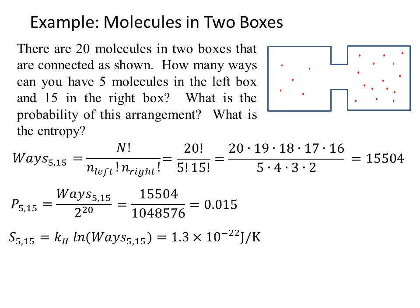If we look at the entropy, we just have to take Boltzmann's constant times the natural log of the ways that we calculated, the 15,504, and we get a result that's 1.3 times 10 to the minus 22 joules per kelvin.